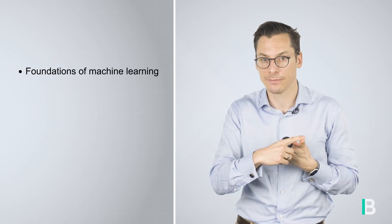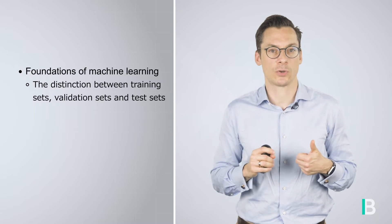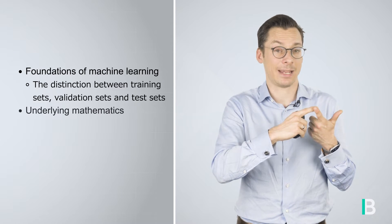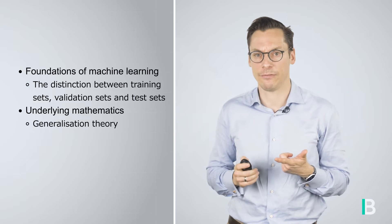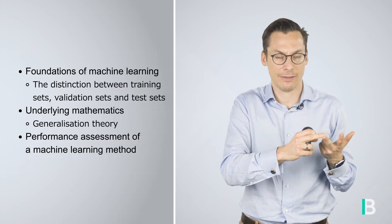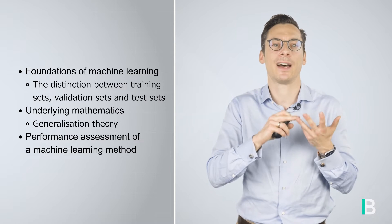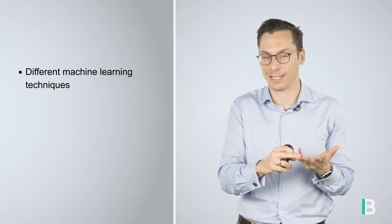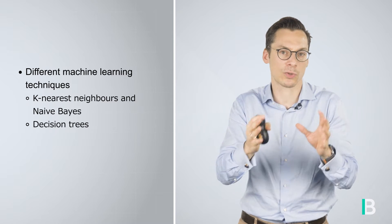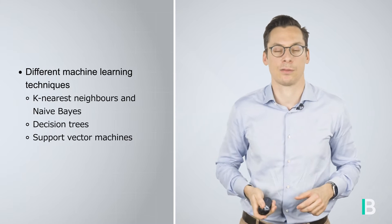You'll see me throughout the different phases of this program, where I will cover four different aspects. First, I will cover foundations of machine learning such as the distinction between training sets, validation sets, and test sets. I will cover underlying mathematics such as generalization theory, how to assess the performance of a machine learning method, and a variety of techniques ranging from k-nearest neighbors and naïve Bayes to decision trees, support vector machines, and clustering.